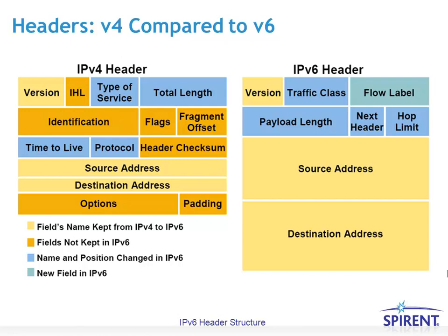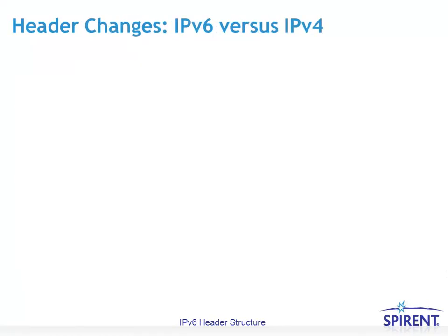Another difference is that the IPv6 header is a bit larger than the IPv4 header, which makes sense as the address space increased from 32 to 128 bits. Now let's go over in more detail the changes between the IPv6 and IPv4 headers.